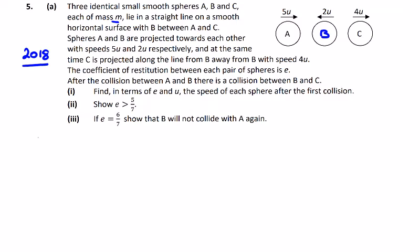So we have A and B. They both have mass m. A has a speed of 5u, which means B has a speed of minus 2u traveling in the opposite direction. We have P and Q after the collision. Part (i): Find in terms of e and u the speed of each sphere after the first collision.